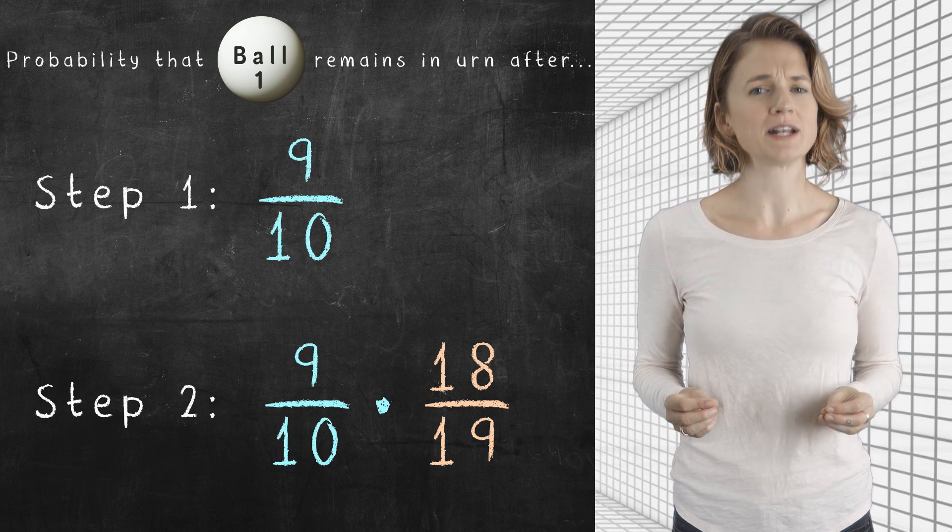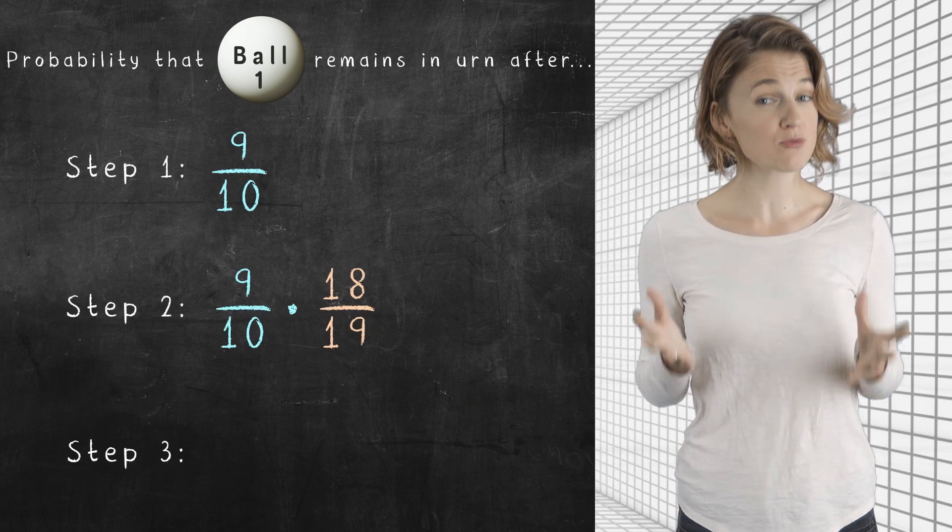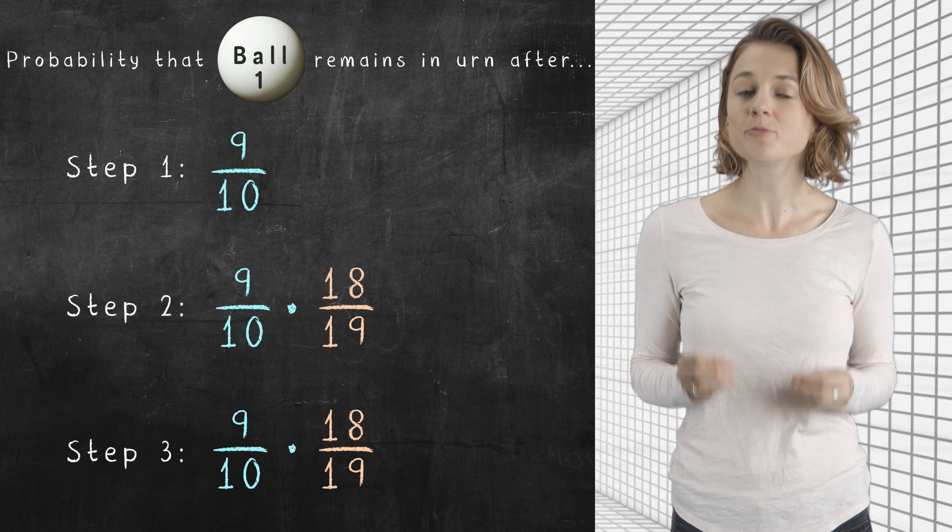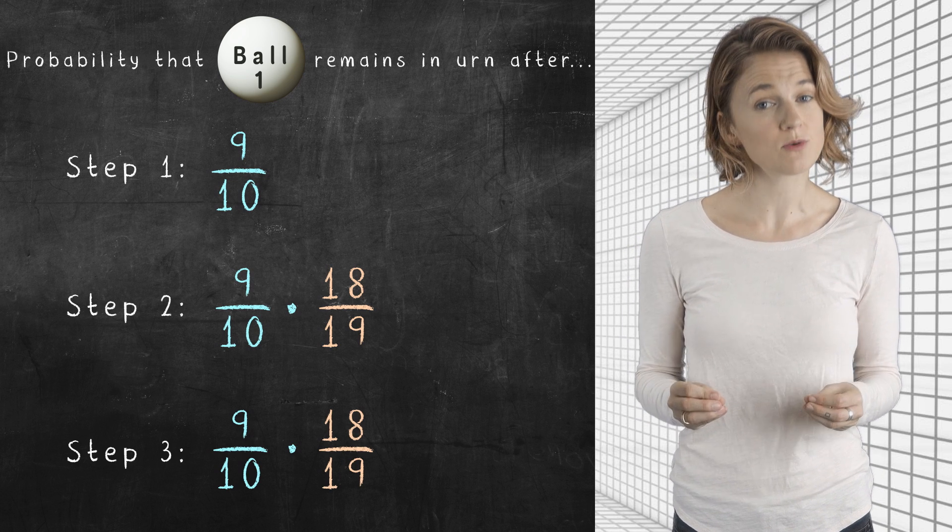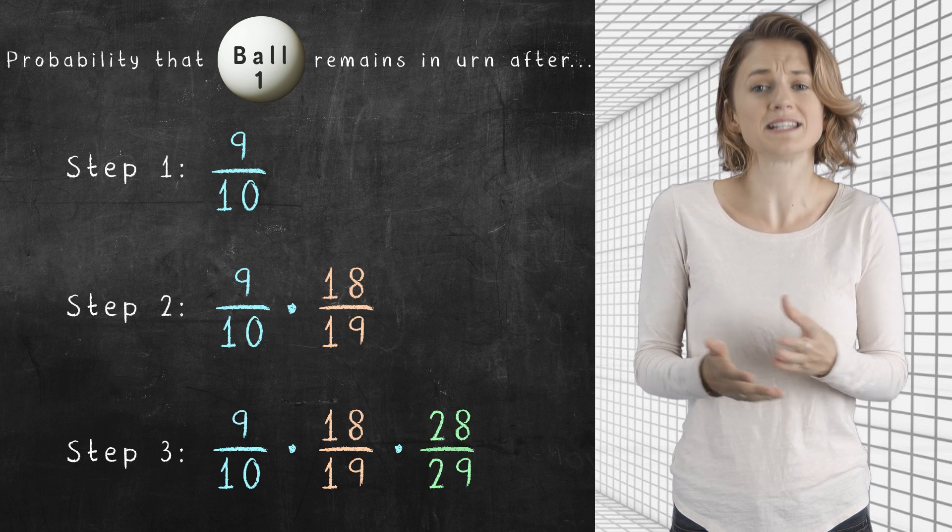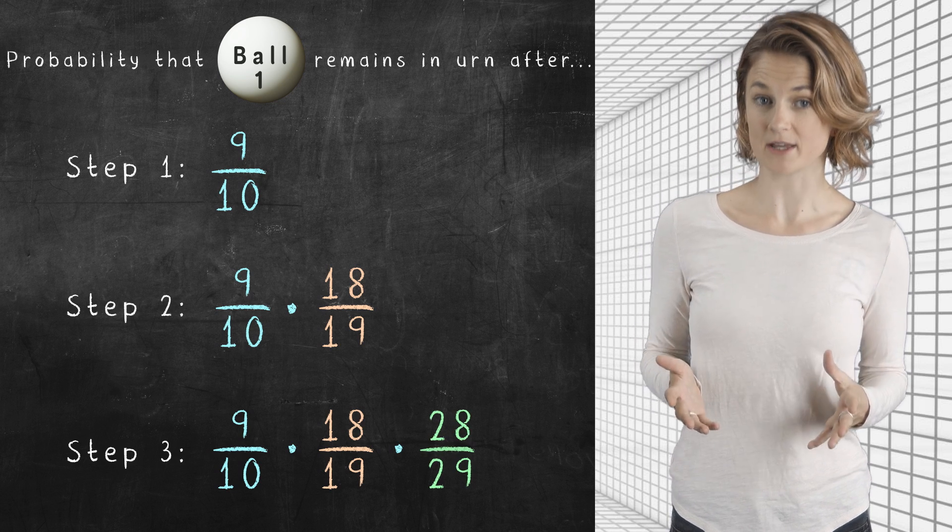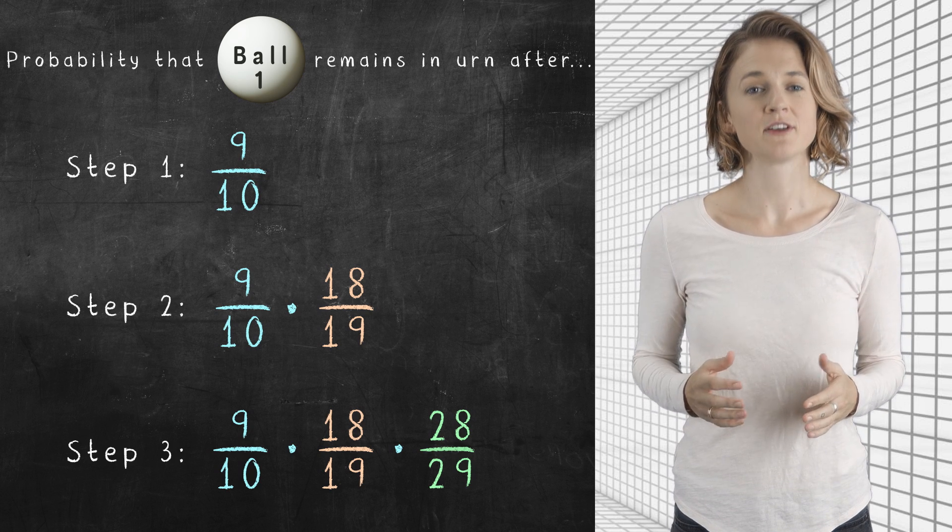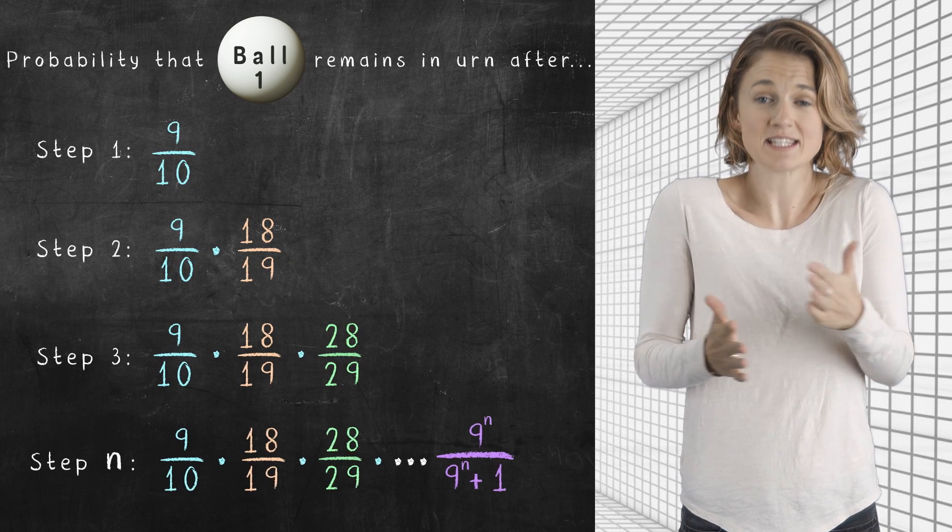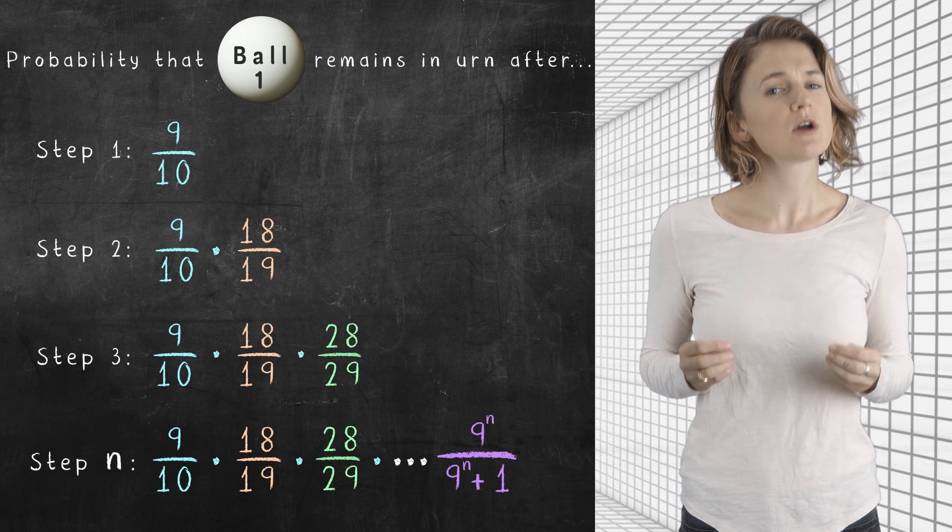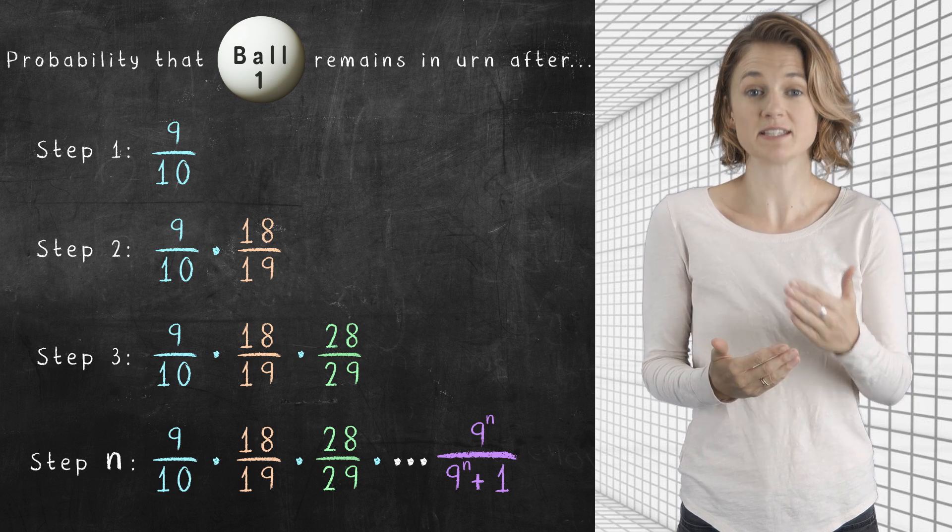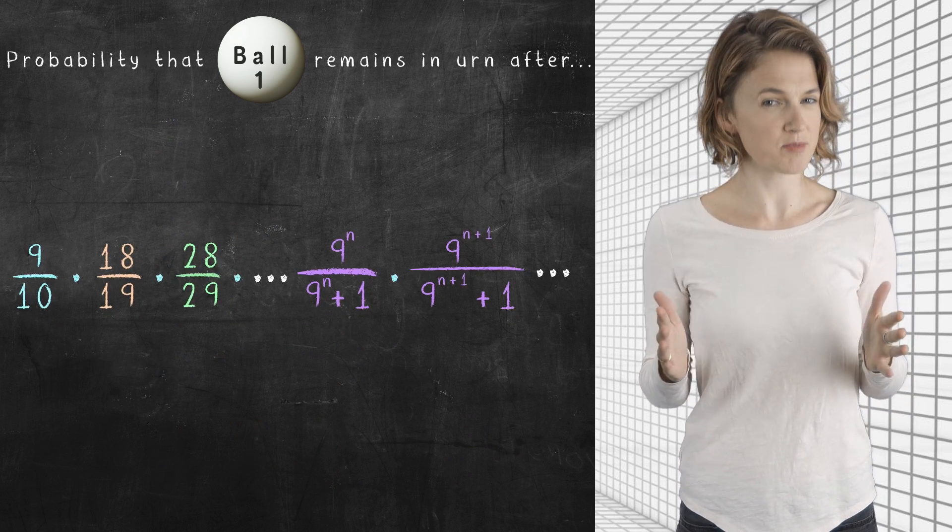What's the probability ball one is still in the urn after step three? It had a 9/10ths times 18/19th chance of still being in the urn after step two. So we multiply that by 28/29ths, which is the probability that it's not removed in step three. Continuing this pattern, the probability that ball one is still in the urn after step n is this big product. So the probability that ball one is still in the urn at noon, after infinitely many steps, is this infinite product.